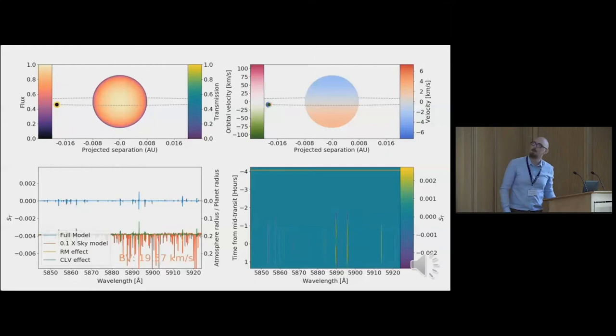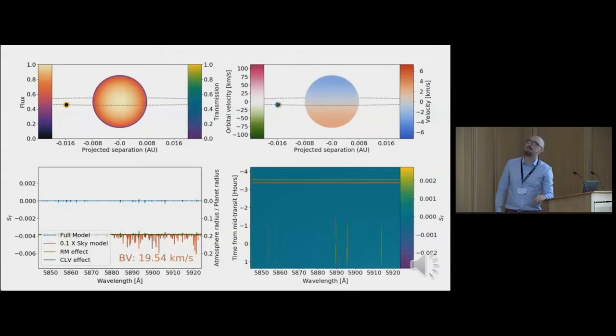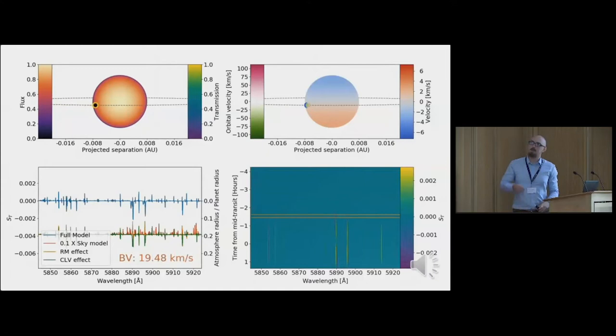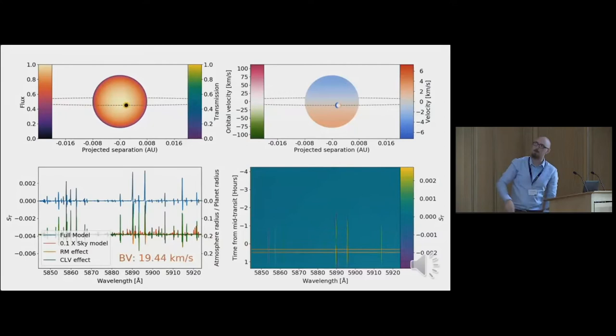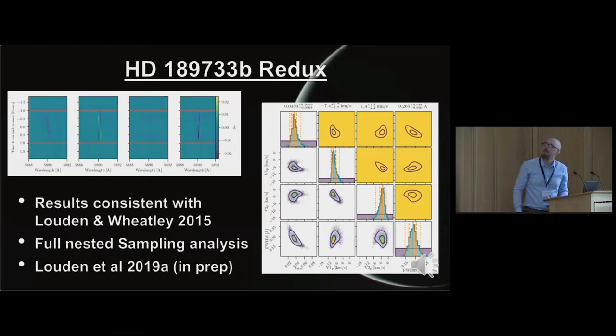Putting all of this together, I have a short movie showing the planet moving in both velocity and flux space. As it comes in front of the star, the transmission spectrum starts to change - you start seeing the sodium feature come in and get deeper, with contamination from the star and also from the planet's atmosphere. On the right is a trail plot showing this in two dimensions, with time moving from top to bottom. All of these effects are taken into account in the model.